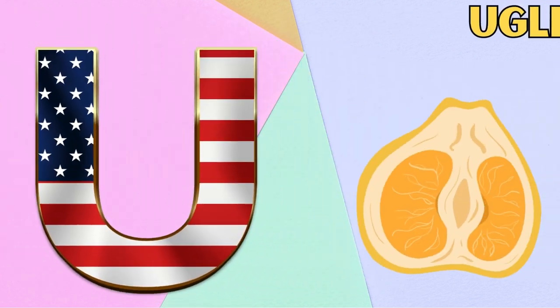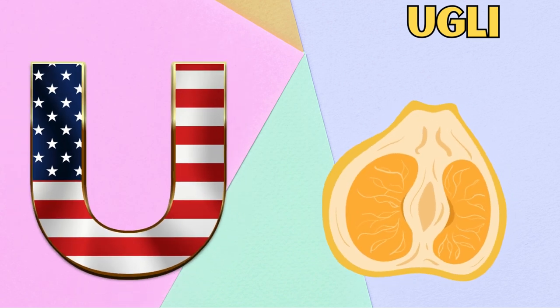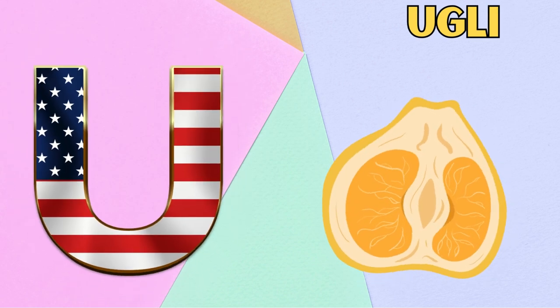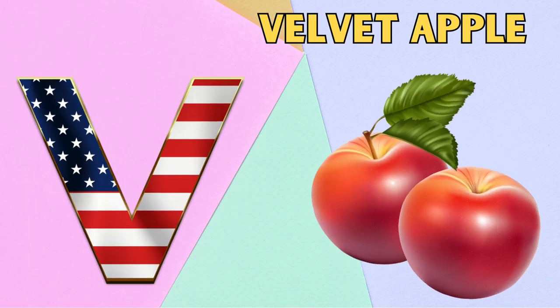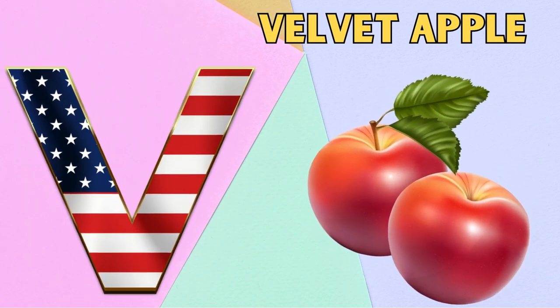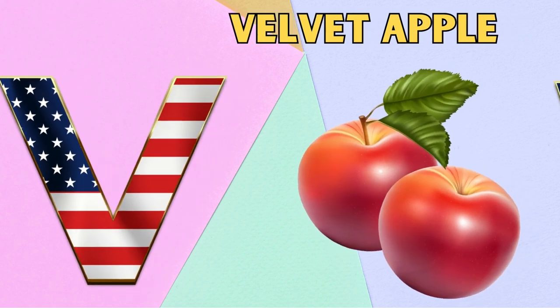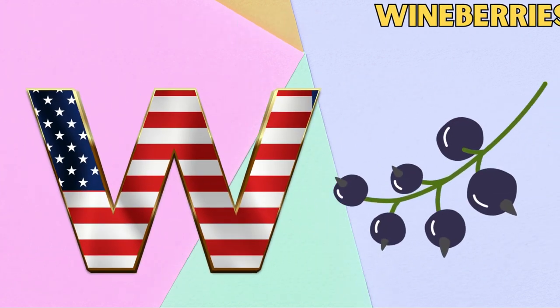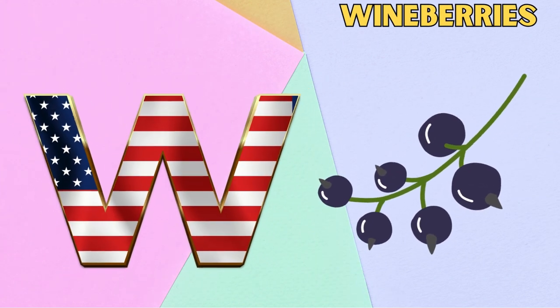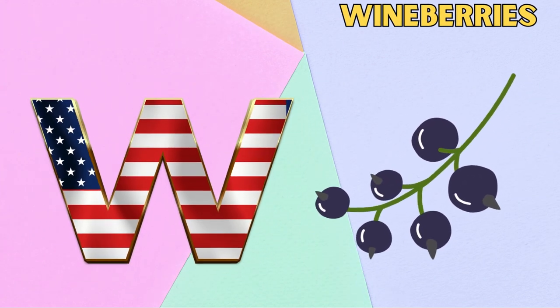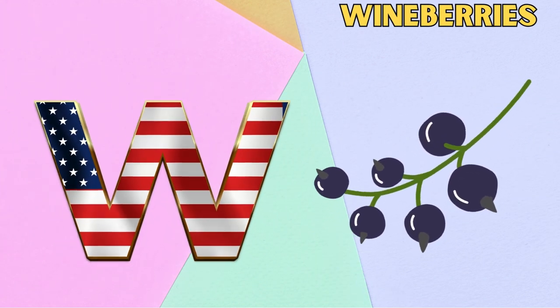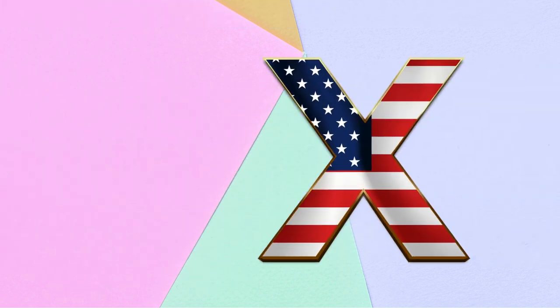U is for Uvli. U. Uvli. V is for Velvet Apple. V, V. Velvet Apple. W is for Wine Berries. W, W. Wine Berries.